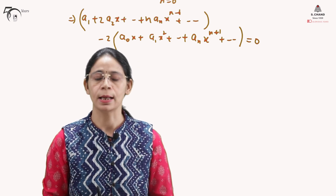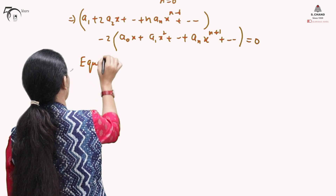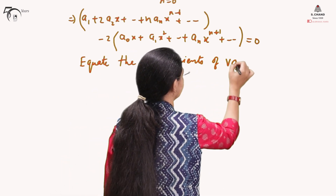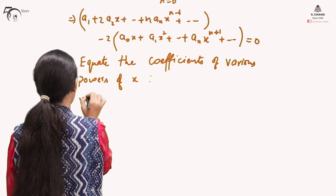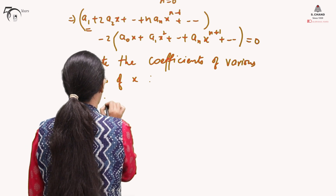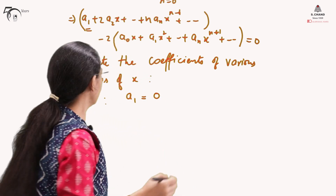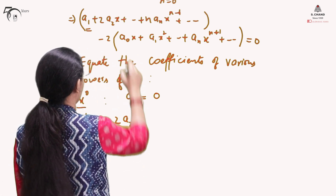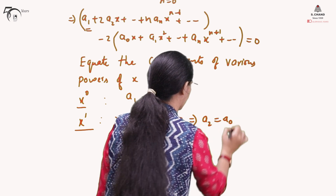The third step is to equate the coefficients of various powers of x on both sides. Equating the coefficient of x^0 (constant term): a_1 = 0. Equating the coefficient of x^1: 2a_2 - 2a_0 = 0, which gives a_2 = a_0. Similarly, we keep on equating coefficients for higher powers of x.